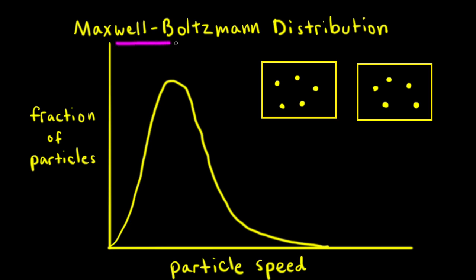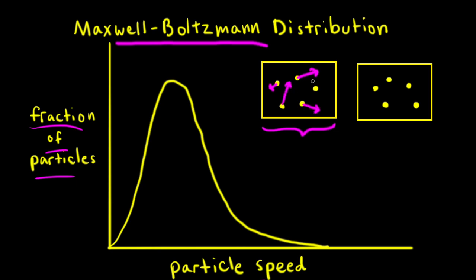Let's apply collision theory to a Maxwell-Boltzmann distribution. A Maxwell-Boltzmann distribution has fraction of particles on the y-axis and particle speed on the x-axis, and it shows us the range of speeds available to particles in a sample of gas. In a particulate diagram, particles in a gas sample at a particular temperature T are not all traveling at the same speed — one particle might travel very slowly, a few more a little faster, and one particle the fastest, represented by progressively longer arrows.